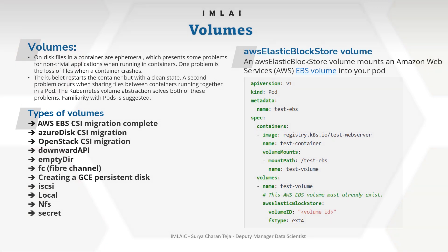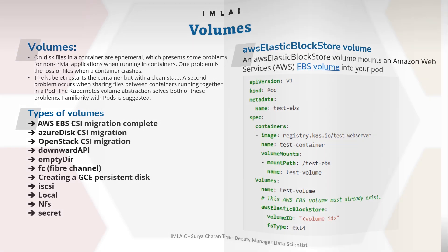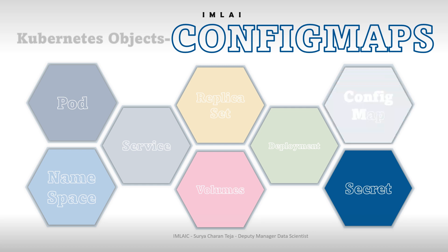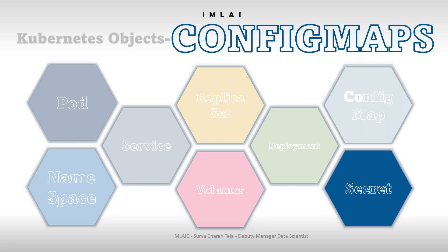Let's look at another Kubernetes object: the ConfigMap. In a simplistic way, a ConfigMap is a way of storing environment variables and files in one Kubernetes object. Whenever you want, you can use it wherever you want, and whichever pod requires it, we can inject these ConfigMaps into that pod so we can easily use them without rewriting them again and again.